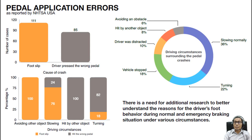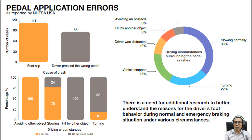Ladies and gentlemen, this figure shows the statistics of pedal application errors as reported by the USA National Highway Traffic Safety Administration or NHTSA in year 2012. Over a total of 196 cases reported, 56.6% occurred because of foot slip, while 45.4% happened due to the driver pressing the wrong pedal. The driving circumstances surrounding the pedal crashes are: avoiding an obstacle, hit by another object, driver was distracted, vehicle stopped, slowing normally, and turning. Therefore, there is a need to further research in order to have a better understanding of the reasons for the driver's foot behaviour during normal and emergency braking situations under various circumstances.